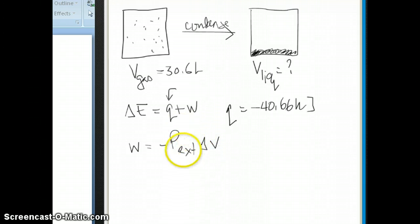Now the question is, what is P external? Well, the reaction or this condensation occurs at one atmosphere. So that's your P external. The question then is, what is delta V? Well, we know that delta V is final volume minus initial volume. Here's the final volume. It's the volume of the liquid. Here's the initial volume. It's the volume of gas. So if we can calculate the volume of the liquid, then we can solve this problem because that allows us to calculate W, which then allows us to calculate delta E.